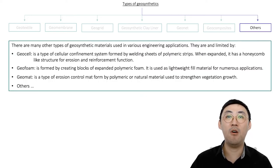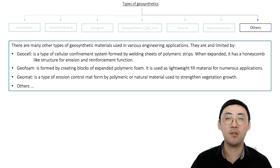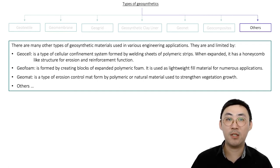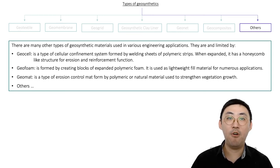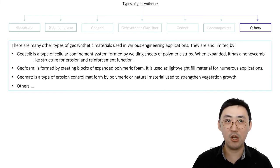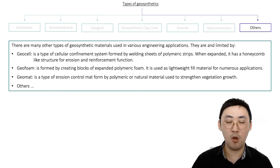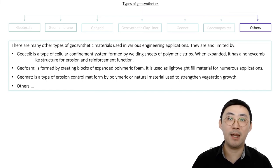There are other types of geosynthetic materials used in various engineering applications. For example, geosynthetic cells — a cellular confinement system formed by welding sheets of polymeric strips that expand into a honeycomb-like structure for erosion control and reinforcement. Geoforms are blocks of expanded polymeric foam used as lightweight fill materials. And geomats are erosion control mats formed from polymeric or natural materials used to strengthen vegetation growth.